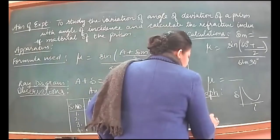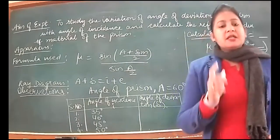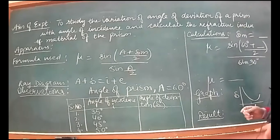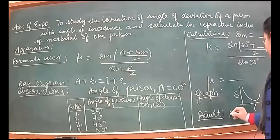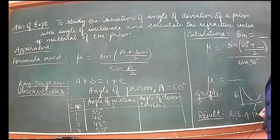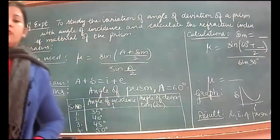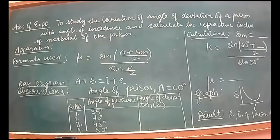After plotting the graph, the result is the refractive index of prism material, which will be 1.5. That is going to be your answer. Now we are going to do the experiment.